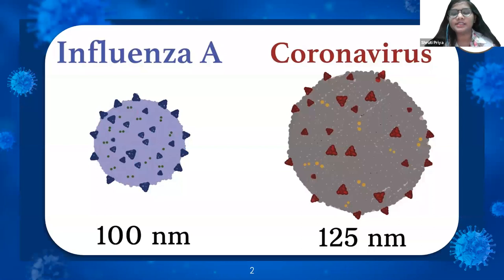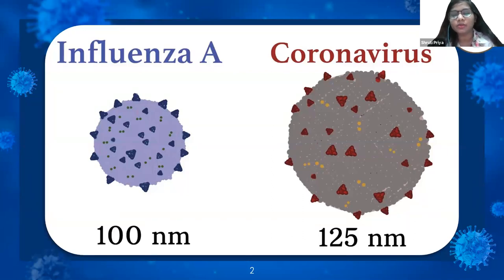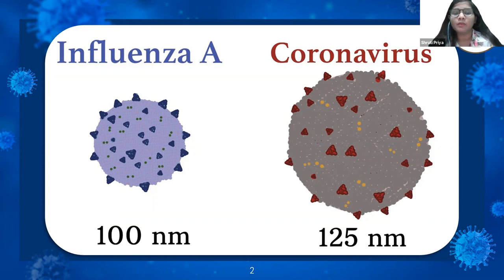First, let us understand the two viruses. The common flu virus is known as influenza A or B, and the COVID-19 virus which we know as coronavirus. The basic biological difference between these two viruses is their size. Influenza is around 100 nanometers whereas coronavirus is around 125 nanometers — only a 25 nanometer difference between the two viruses.